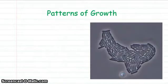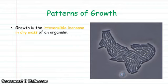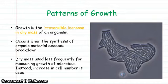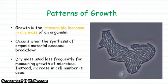In terms of patterns of growth, growth is the irreversible increase in dry mass of an organism, and it occurs when the synthesis of organic material exceeds its breakdown. For microbes, dry mass is used less frequently, and instead we use cell number, because even a very large sample of microbes, when completely dehydrated to work out dry mass, would still result in a very small mass.